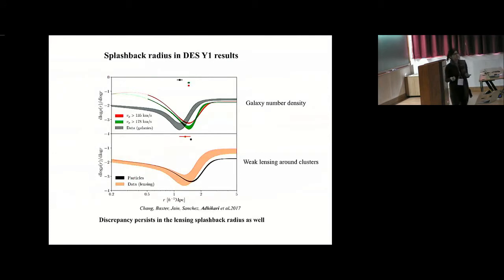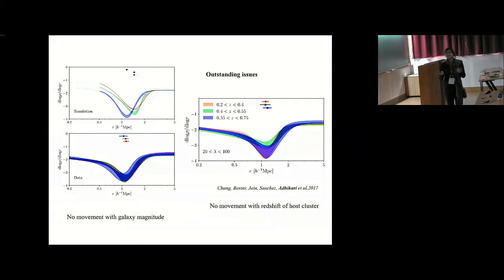We found the same discrepancy in DES results as well. The green and red curves are from subhalos in simulation, and the black is from measurements. We found the same discrepancy in weak lensing measurements around these clusters as well, although it's noisier. So the outstanding problems that remained was this 20 percent discrepancy. Apart from that, we also did not see any evidence for dynamical friction. We did not see any movement of this radius with the galaxy magnitude, which we expect to correlate with subhalo mass. And what we also didn't see is any redshift evolution, but I think that is expected if we don't stack in accretion rate.